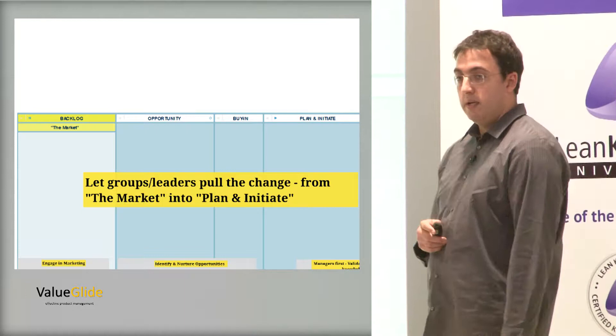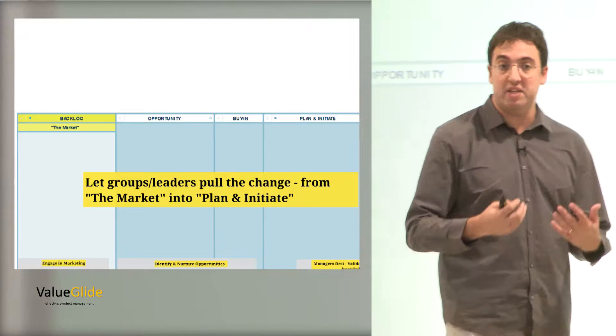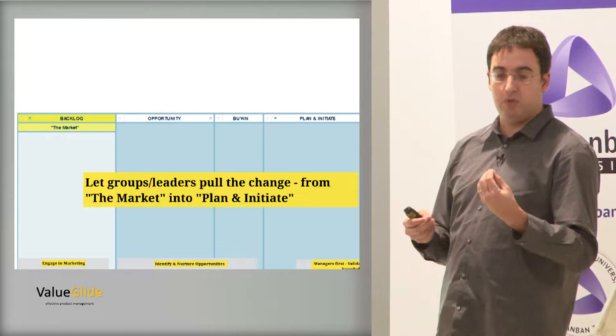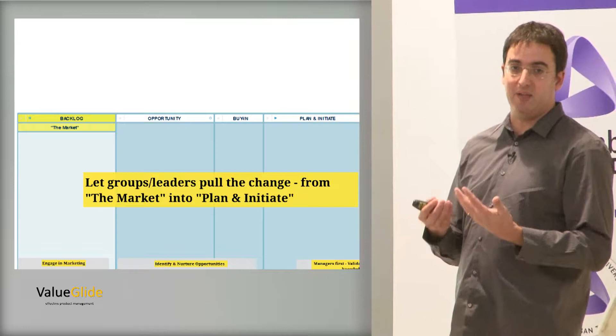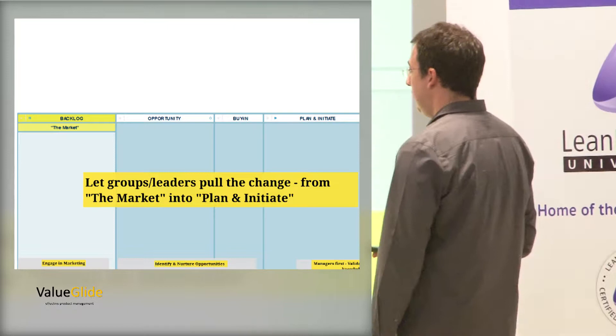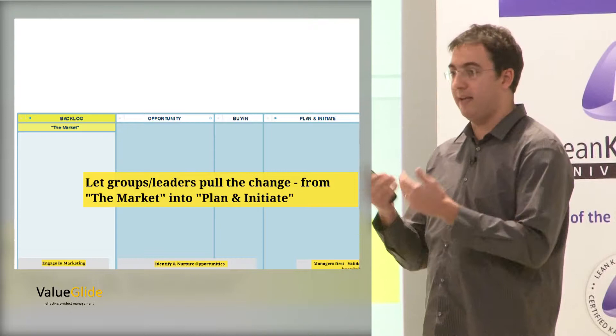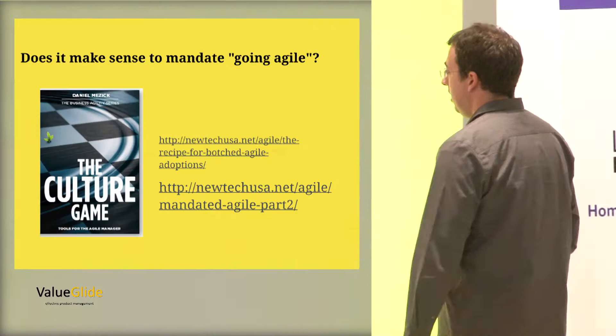So basically what we are doing is we are saying, okay, the same Kanban board, more or less, there are opportunities of groups that would benefit from going agile. Let's consider that our market. We are the change agents inside an organization or the executive management inside the organization. We want to get more and more customers or users inside our internal market to leverage this new thing that we believe will provide them with better results. But what we do is we don't tell them you have to do it. We expect them to pull it. Like consultants, like Apple, like everyone, we can't force you to buy something. We market it to you and you buy it. So let's use this model.